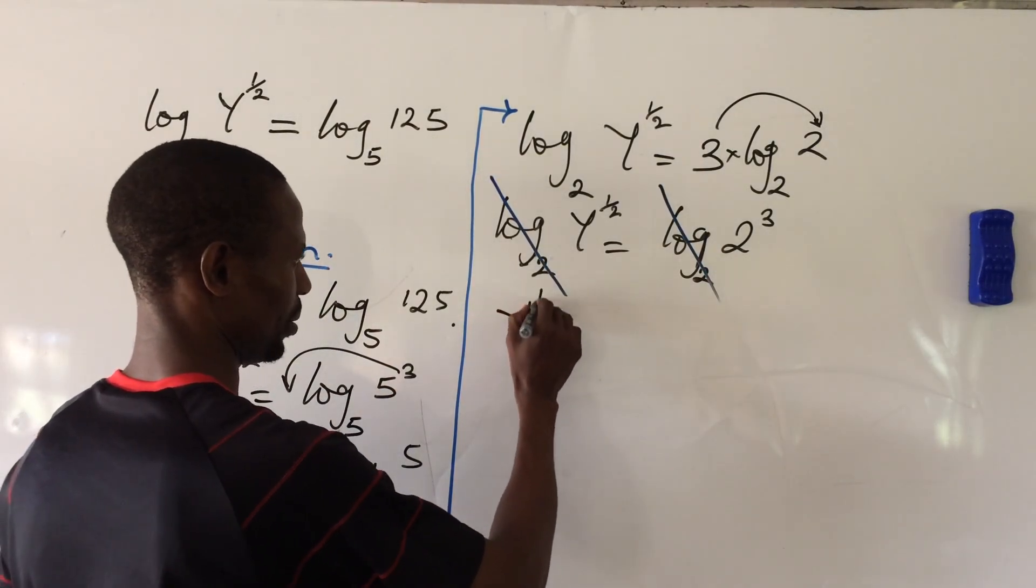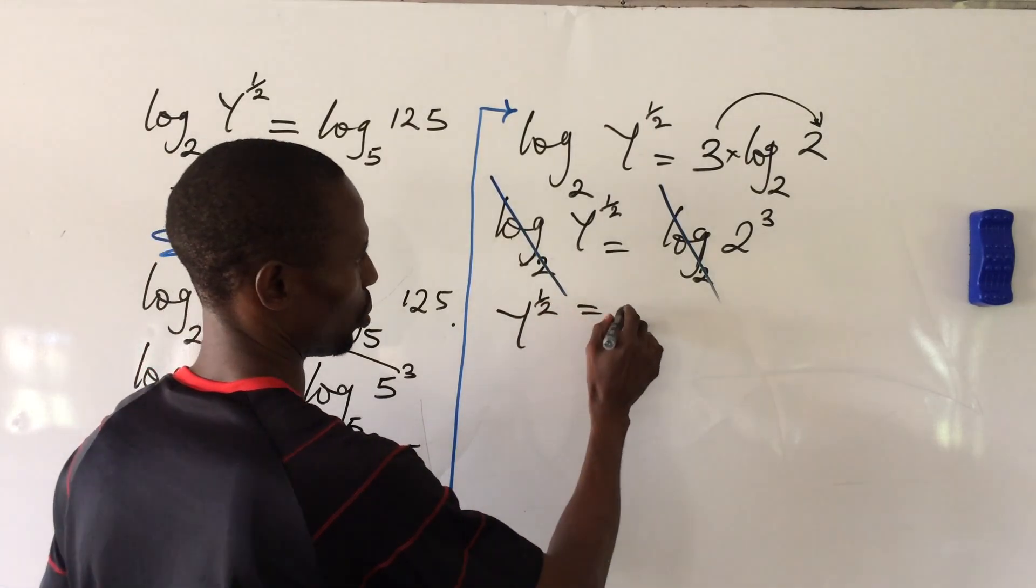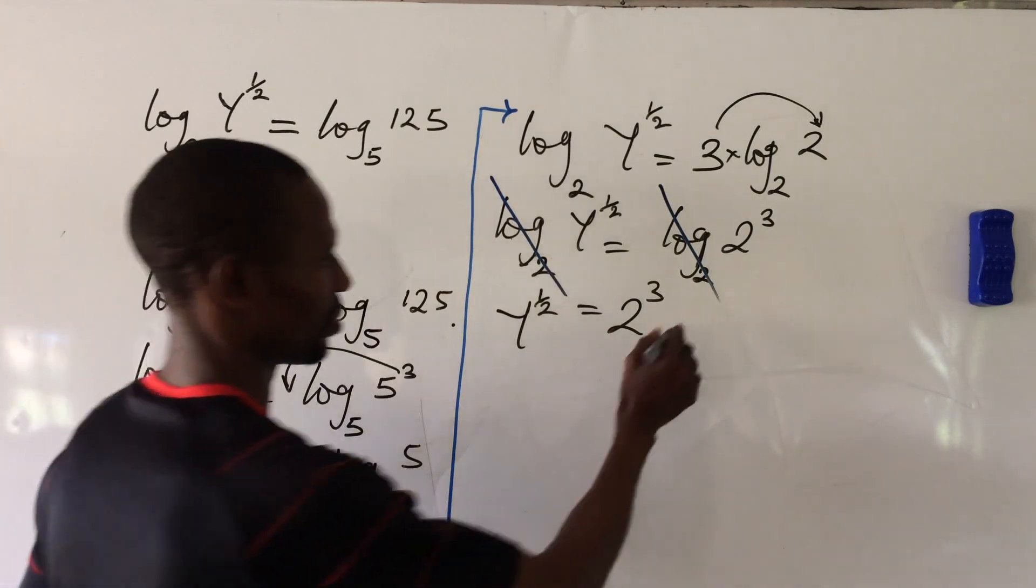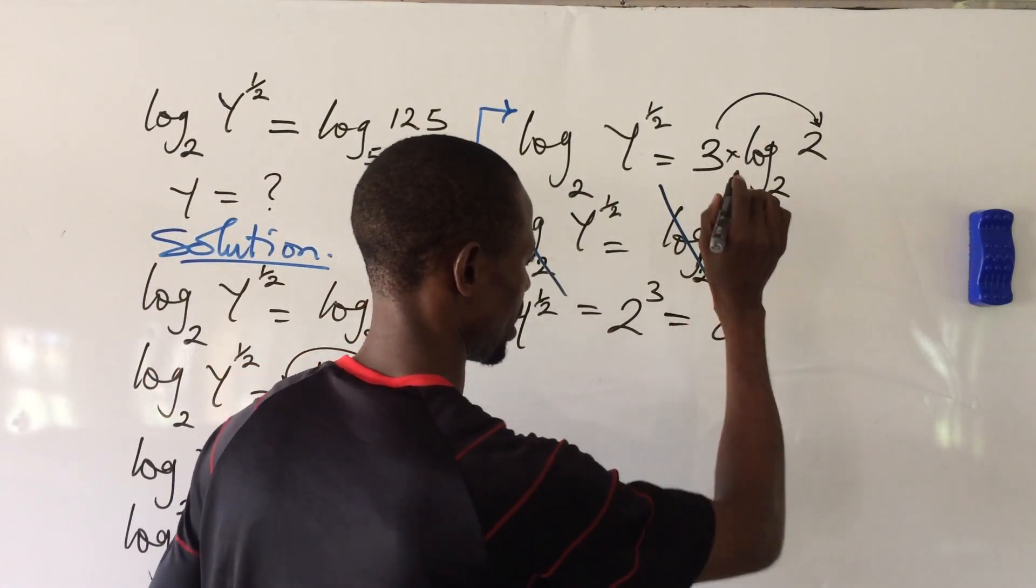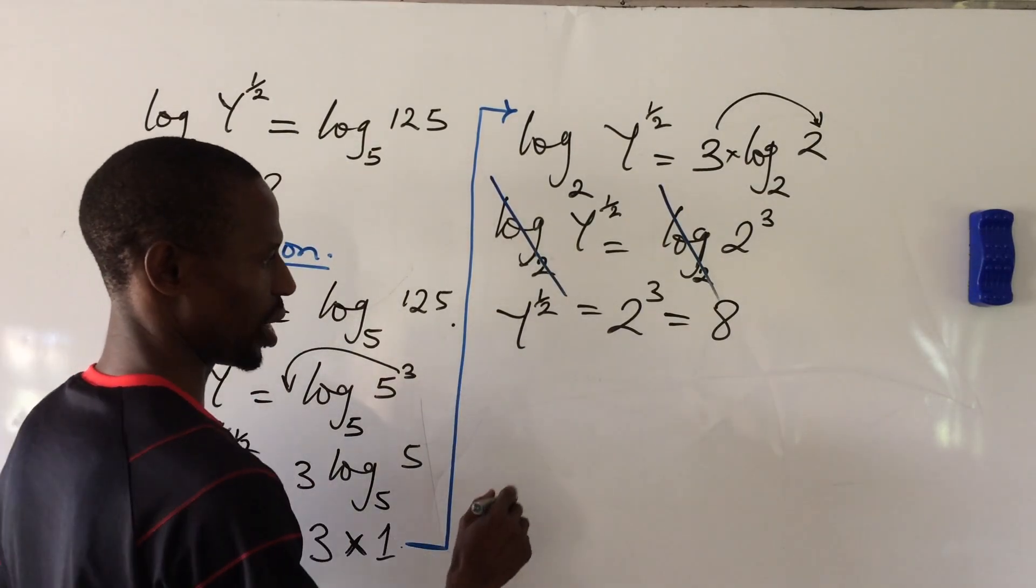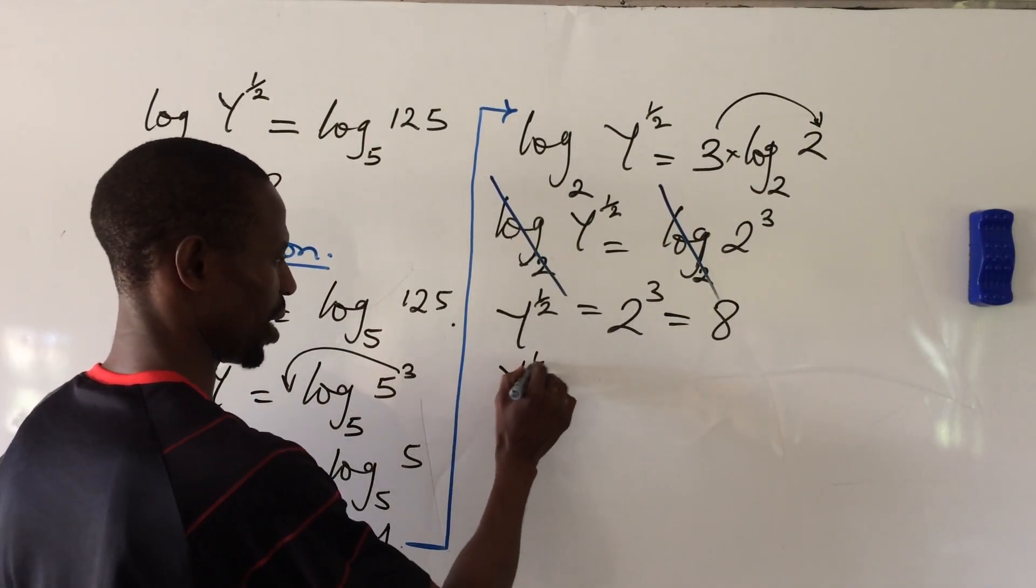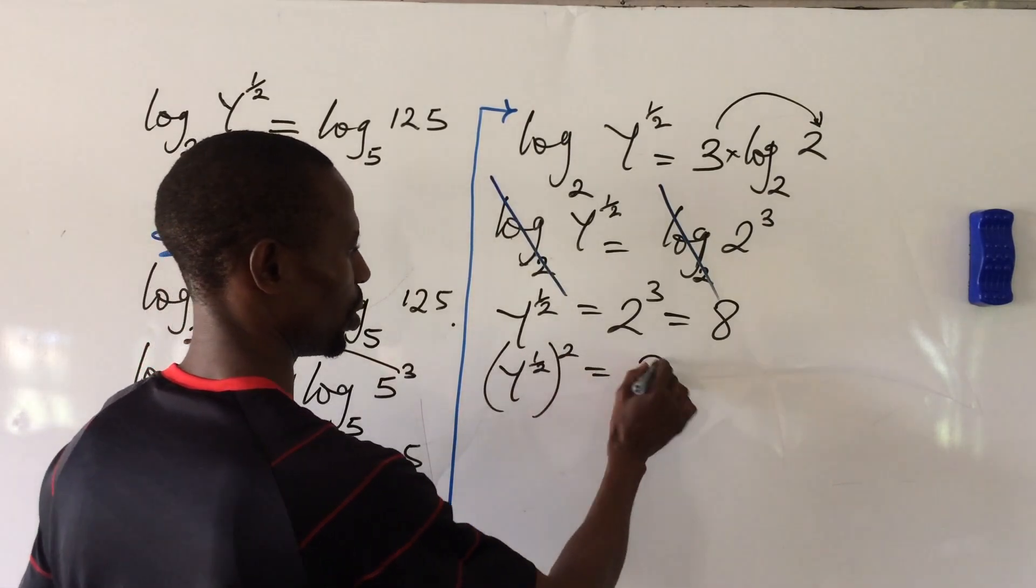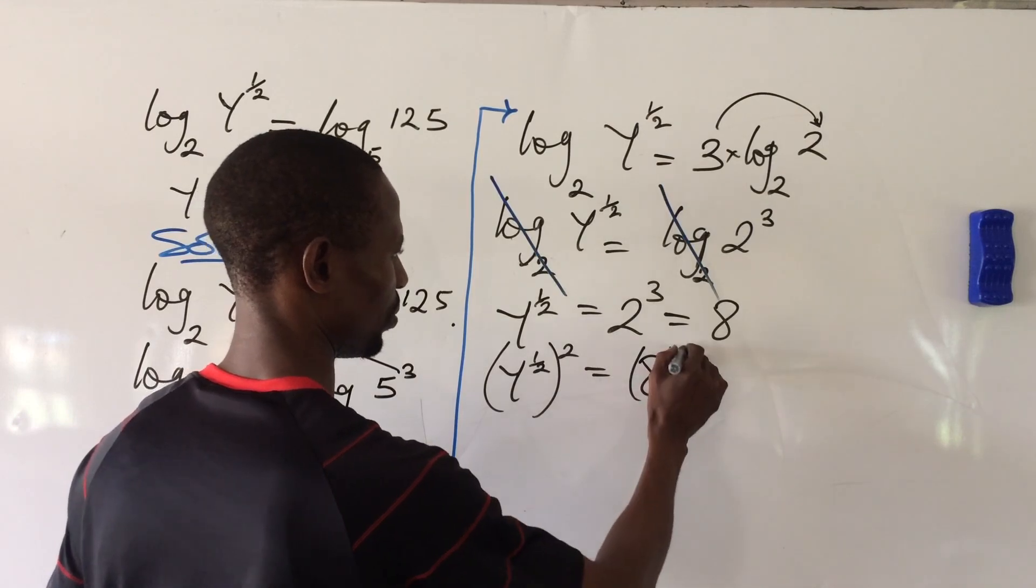So we now have y to the power of 1/2 equals 2 to the power of 3. And what is 2 to the power of 3? 2 to the power of 3 is the same thing as 8. From here we are looking for y, so we square both sides. So now we have y to the power of 1/2 to the power of 2 equals 8 to the power of 2.